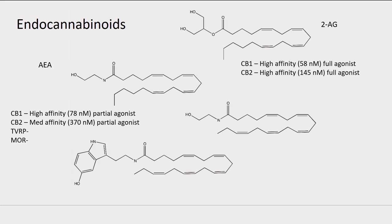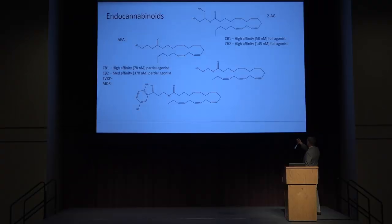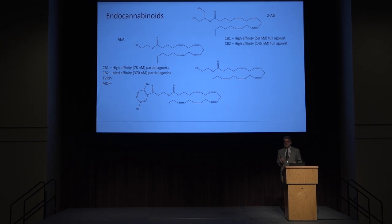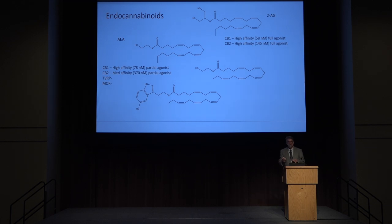These arachidonic acid derivatives are strong cannabinoid receptor agonists. They bind differently to CB1 and CB2 and have different functions in the human body. Neurobiologists talk about arachidonyl ethanolamide, also known as anandamide, as a partial agonist that is tonic in nature. 2-arachidonyl glycerol is referred to as phasic. These molecules modulate neurotransmission — anandamide is kind of always there, always tuning neurotransmission, while 2-AG comes in when there are bursts of neurotransmission.